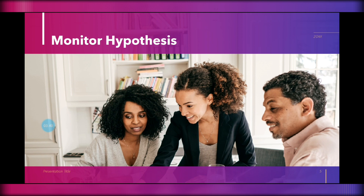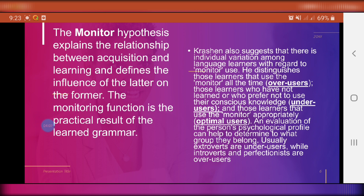Next, we have the Monitor Hypothesis. The monitor hypothesis explains the relationship between acquisition and learning and defines the influence of the latter on the former. The monitor function is the practical result of learned grammar. According to Krashen, the acquisition system is the utterance initiator, while the learning system performs the role of the monitor — or the editor. The role of the monitor is minor, being used only to correct deviations from normal speech and to give speech a more polished appearance.